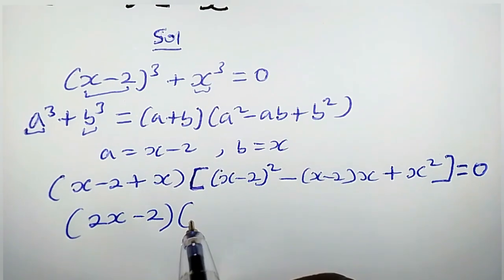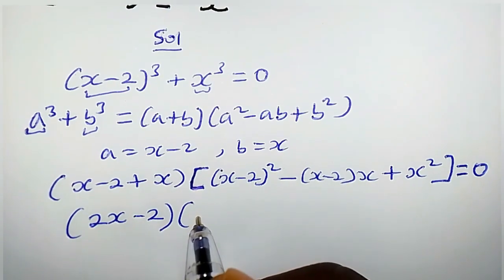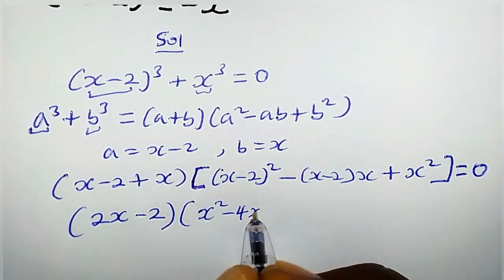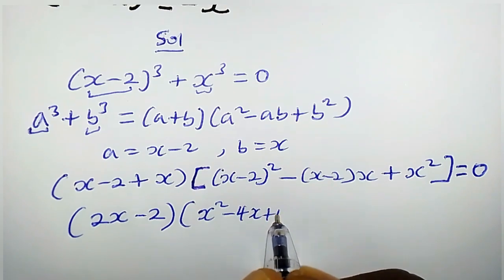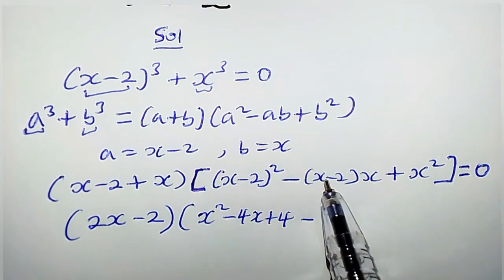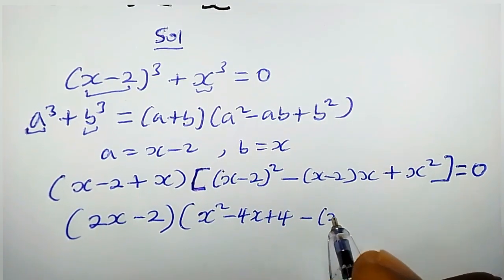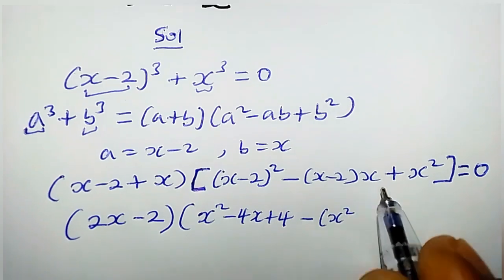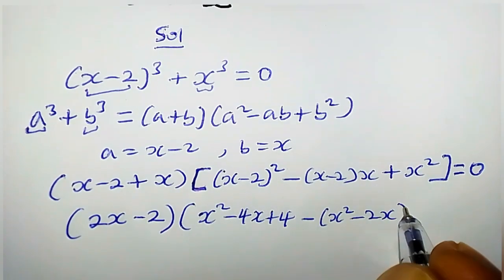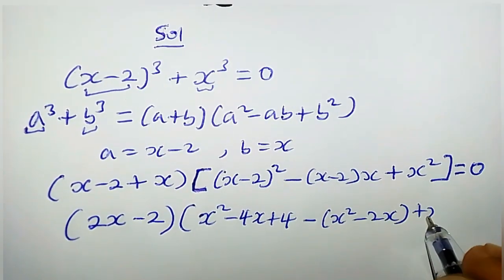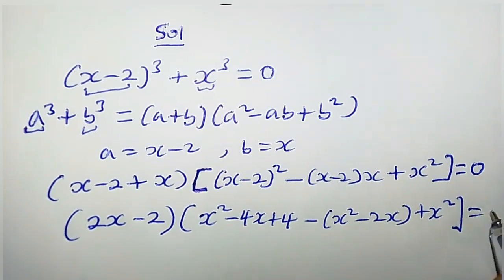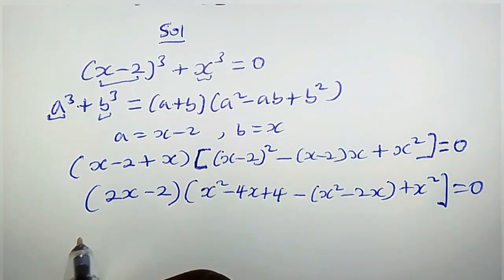So we have (x plus x), that is 2x, minus 2, times the bracket. When you expand (x minus 2) squared, you get x squared minus 4x plus 4, minus x times x which is x squared, minus x times negative 2 which is negative 2x, plus x squared equals zero.